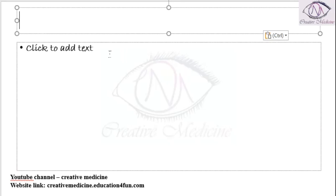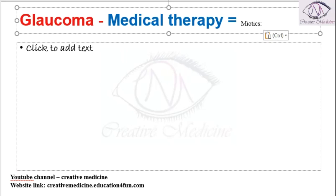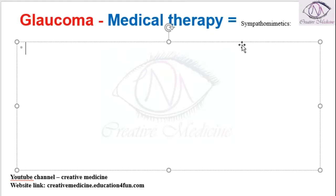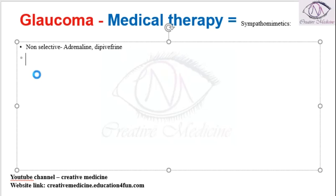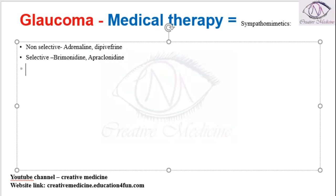For the treatment of glaucoma, we can use some sympathomimetics. Sympathomimetics used in the treatment of glaucoma can be divided into non-selective sympathomimetics and selective sympathomimetics. Non-selective sympathomimetics include adrenalin and dipivephrine, whereas selective sympathomimetics include brimonidine and apraclonidine.